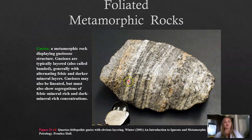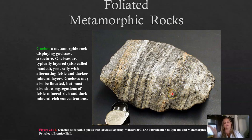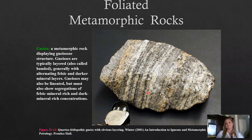Gneiss shows dark and light banding. Some samples show surface oxidation as a red-orange color. The crystals may be finer with less sharp transitions, but you still see the segregation of felsic minerals (light) and mafic minerals (dark). Remember, dark minerals are mafic and light minerals are felsic.